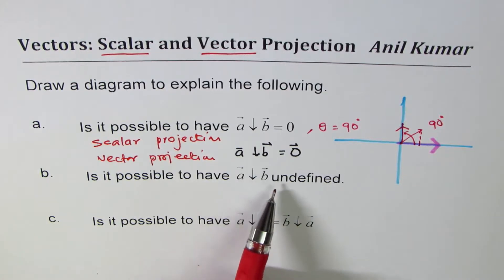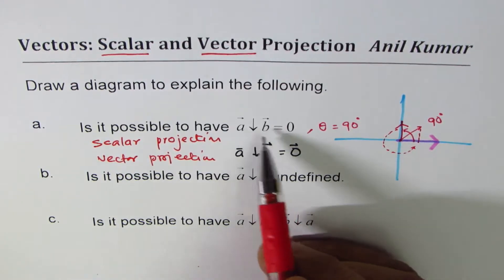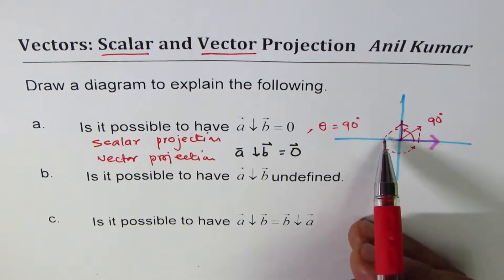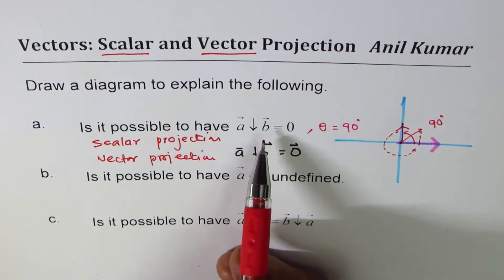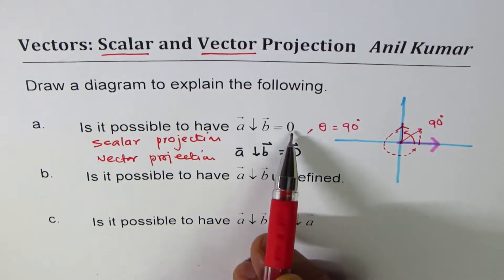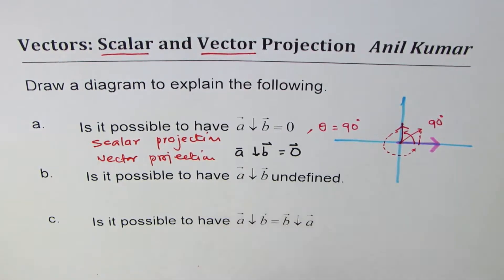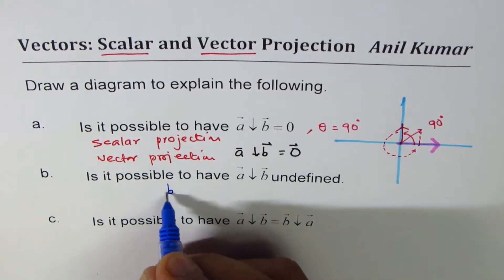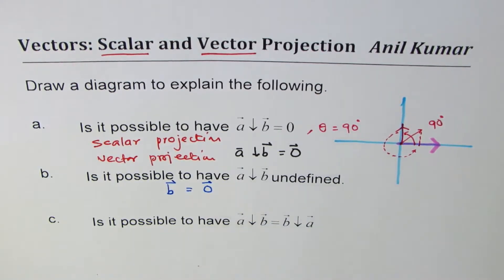For Part B — is it possible to have projection of a on b undefined? If we continue to rotate vector a, the projection of a on b decreases, then increases with a negative sign, and then decreases and increases again. In all cases, if vector b is non-zero, then the projection of a is always defined. It could have a magnitude of zero, but it is always defined, and the direction will be in the direction of vector b. The projection is undefined only when vector b is the zero vector.